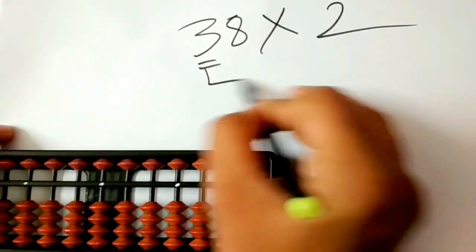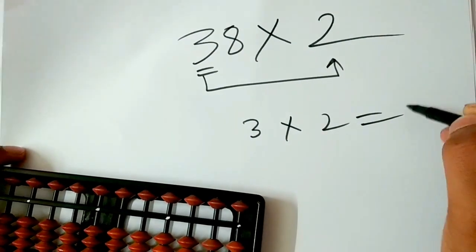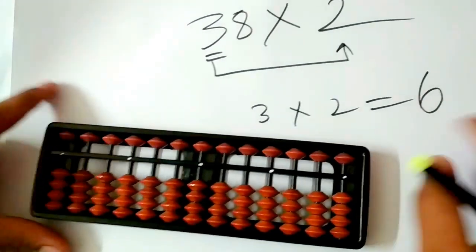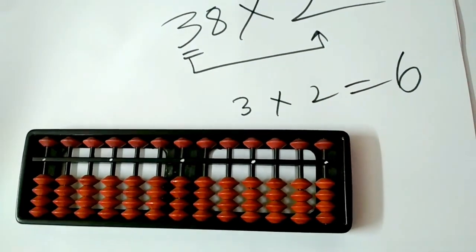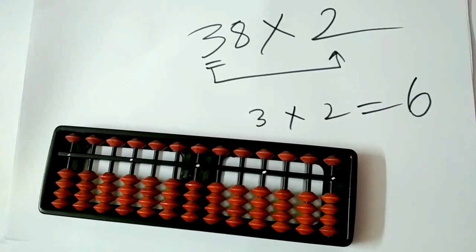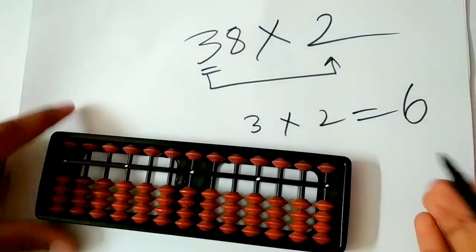The first step as usual is 3 into 2. 3 into 2 gives us 6. Now, 6 is a single digit number. Remember, when you get a single digit number in the first stage, we have to apply the 0 rule. 0 rule is very simple.